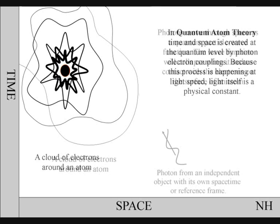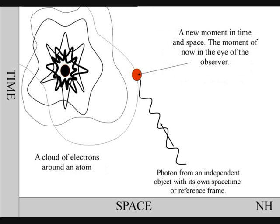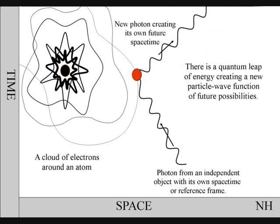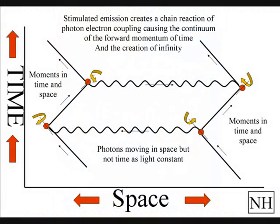In this diagram of an atom, a photon expands through space as a wave-particle function of light. When it makes contact with the electrons on the surface of the atom, the wave-function will collapse into new photon particles and into new moments in time and space. There will be a quantum leap of energy, creating a wave-particle function of future possibilities. In this way, two-dimensional space on the surface of the atom expands into three-dimensional space-time. This is a continuous process within our universe that Einstein called stimulated emissions, creating a chain reaction of photon-electron couplings.